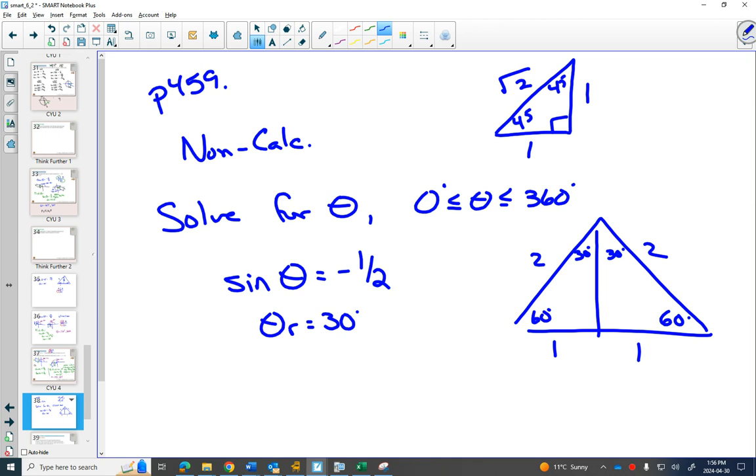But we need to solve for theta, not for the reference angle. So sine of theta is negative, according to your CAST rule. That happens in quadrant 3 and quadrant 4, because sine is positive in quadrant 2, and all of them are positive in quadrant 1.